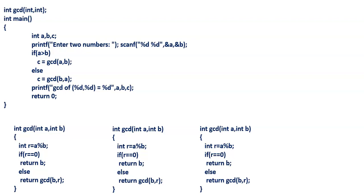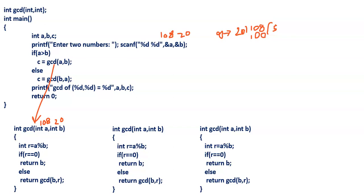Now let us see an example. Let us say we take A value 108 and B value 20. Then it will call the GCD function with GCD of A, B — that is GCD(108, 20). In the first GCD function call, we are dividing 108 by 20. 5 times 20 is 100, and the remainder value is 8. Since the remainder is not equal to 0, we again call GCD of B, R — that is GCD(20, 8).